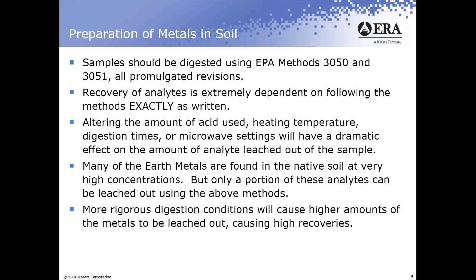Altering the amount of acid, heating temperature, digestion times, or microwave settings will have a dramatic effect on the amount of analyte you can leach out. Many earth metals are found in native soil at very high concentrations, but only a portion can be leached out using these methods. In the soil there are silicate structures — the rigorous nature of methods 3050 and 3051 can only leach out a certain amount. Some silicate structures contain high levels of earth metals that won't come out because you can't break apart that structure with the acid and time used.